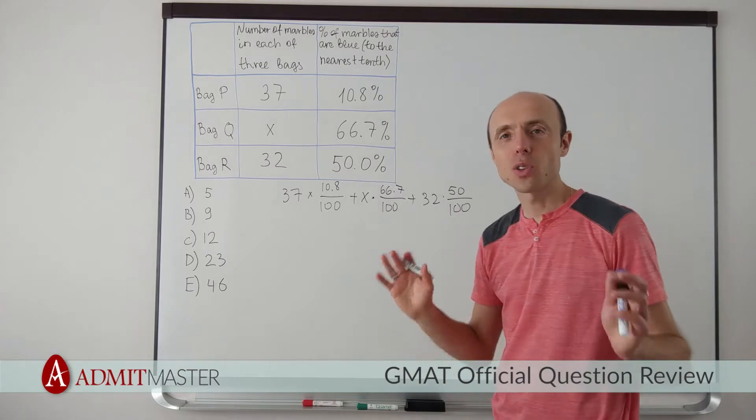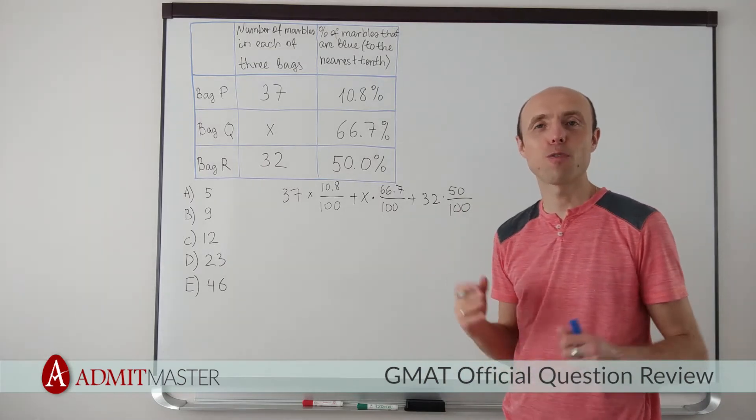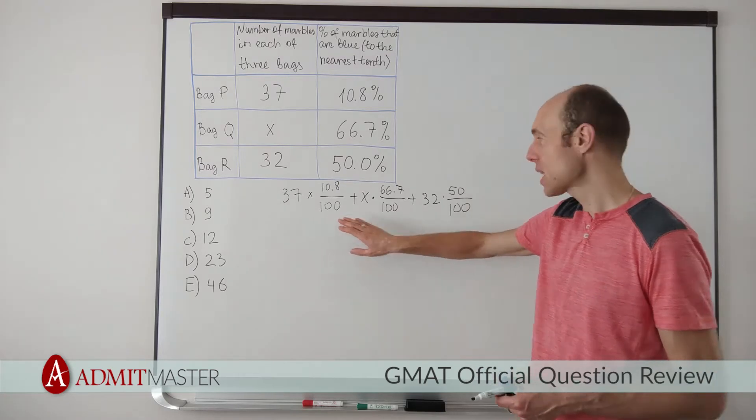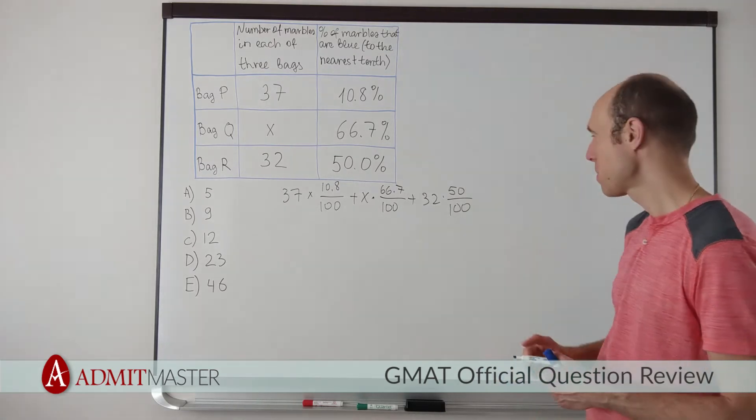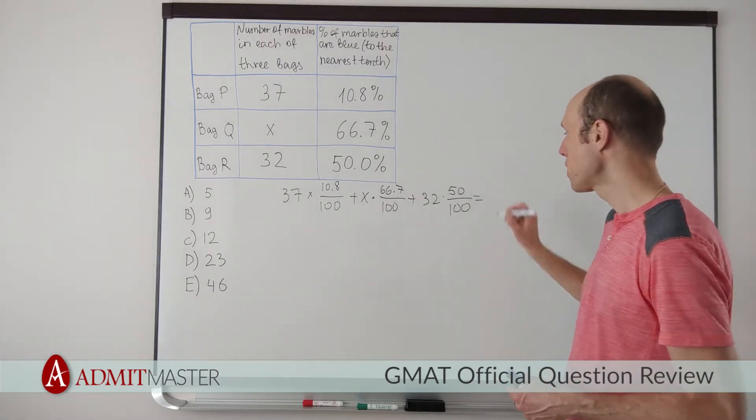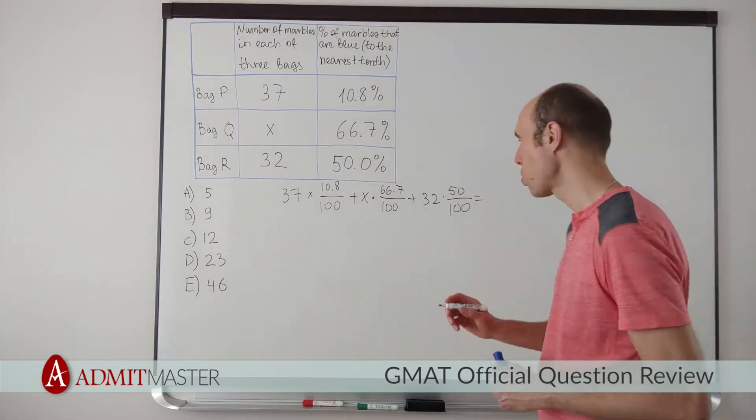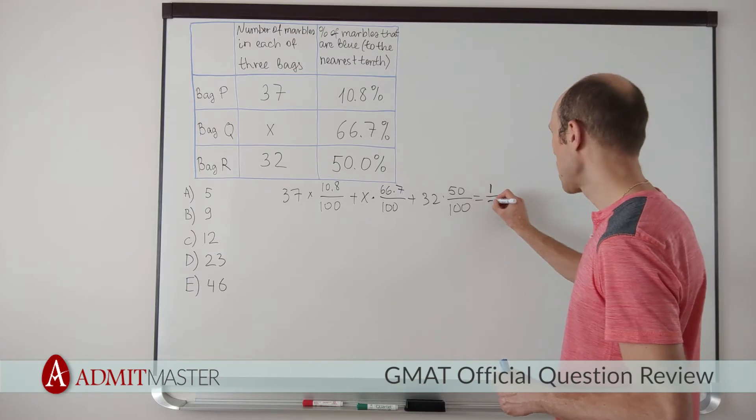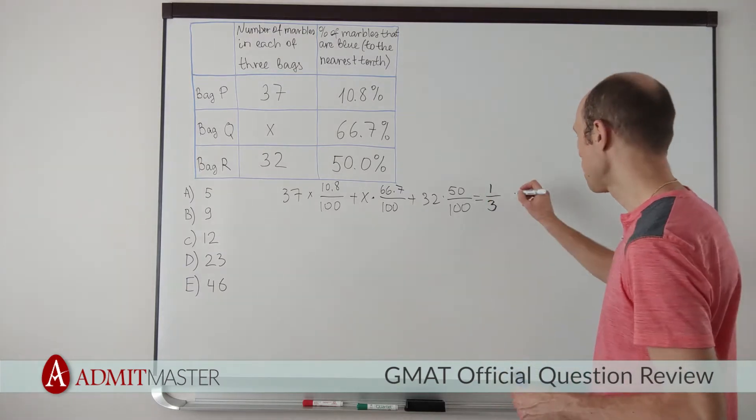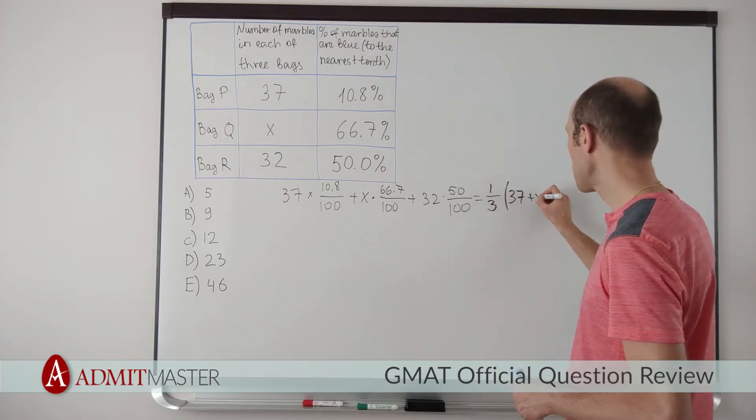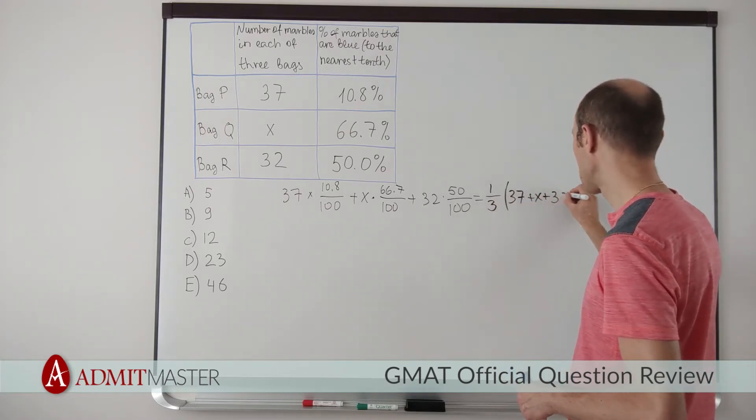plus 32 times 50 divided by 100, is going to be the total number of blue marbles. That is the total number of blue marbles in the first bag, in the second bag, and in the third bag. We are then told that this number is going to be a third of the total. So that has to equal one-third of the total number of marbles, which is going to be 37 plus x plus 32.